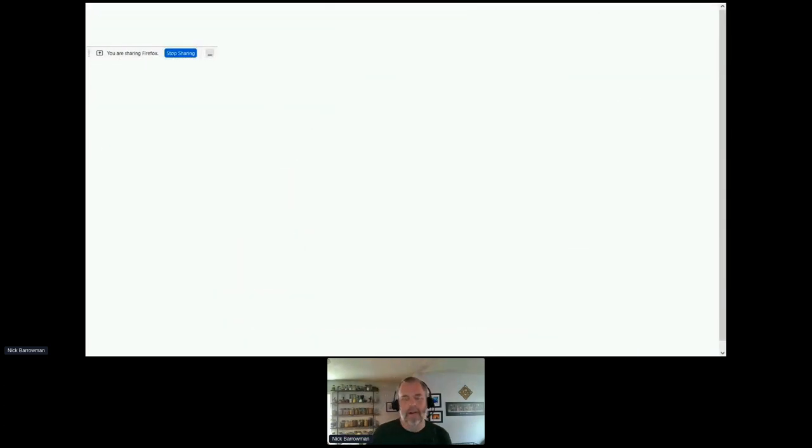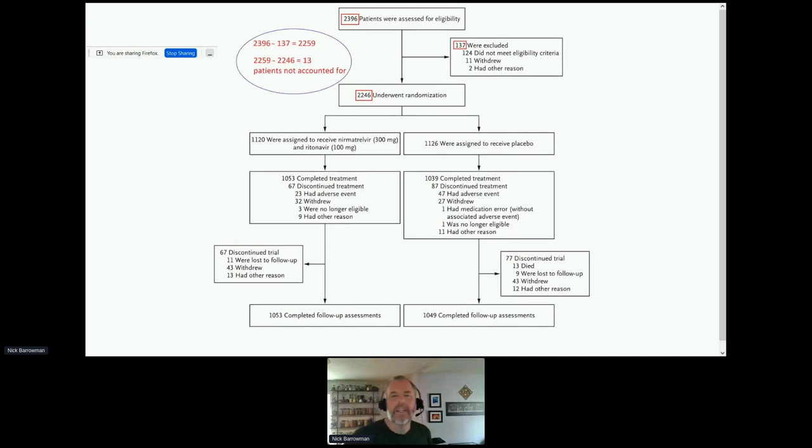I noticed that there was an error in the diagram. And here's the error. There were 2,396 patients assessed for eligibility. And 137 of them were excluded. And then 2,246 underwent randomization. But if you look at those numbers, they don't add up, right? So 2,396 minus 137, well, that gives 2,259, not 2,246. So there are 13 patients who weren't accounted for in this diagram. And I don't know exactly what the issue was, whether it was just a misprint or if there were 13 patients. It's hard to say.